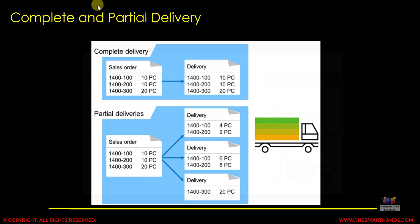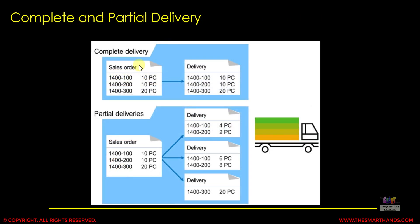The complete and partial delivery settings maintained in the business partner data play a very important role in the availability check. If the complete delivery setting is active for a business partner, then in the sales order — whether there are 3 items or more — all of them must be delivered in one go. So even if stock is available for one or two items, a delivery will only be created when stock is available for all of them.